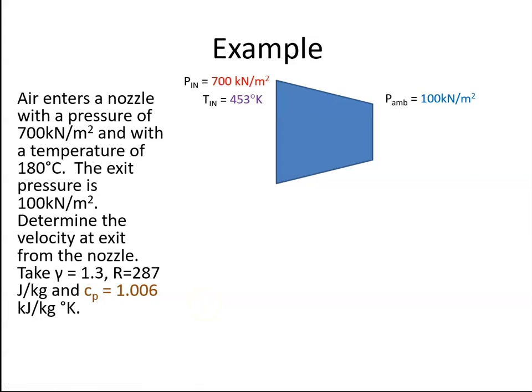Okay, so here's our question. This is our nozzle. We're told the pressure at the inlet is 700 kN/m². The temperature is 180°C. When you add 273, that becomes 453 K. The ambient pressure here is 100 kN/m². And we're asked to determine the velocity at the exit from the nozzle.